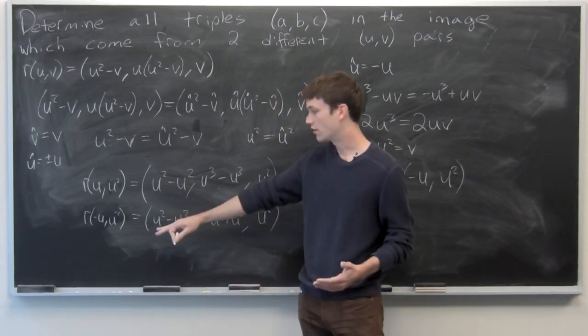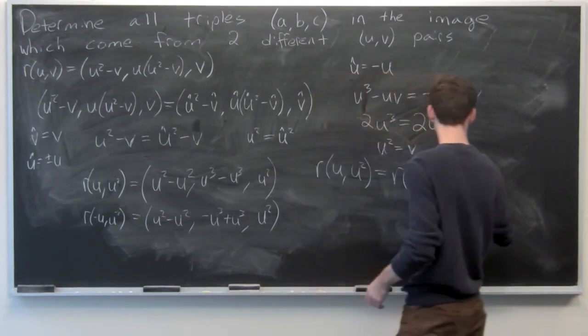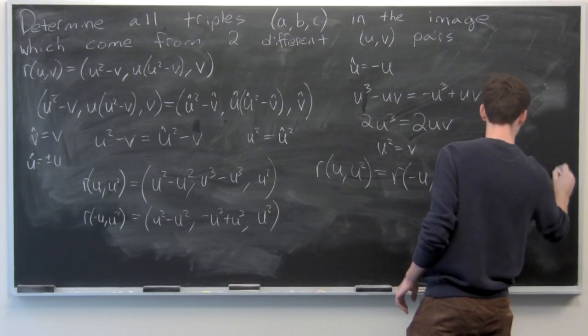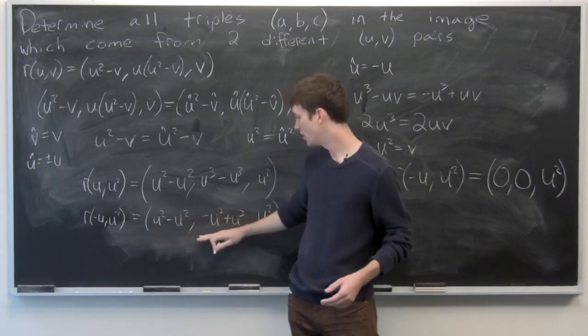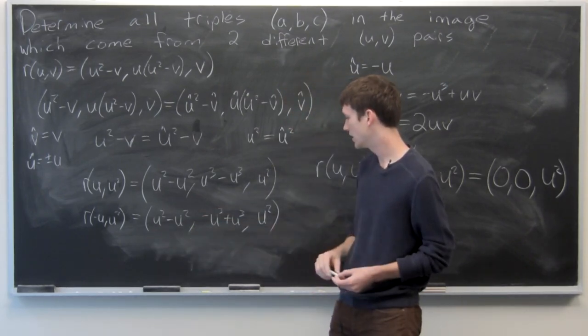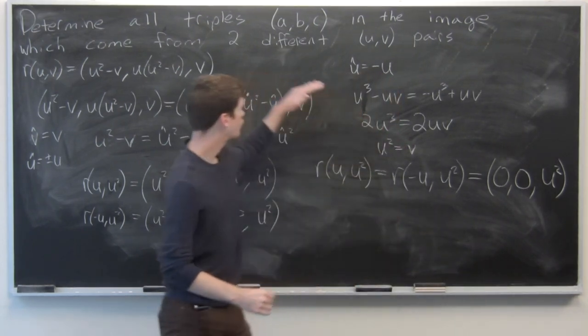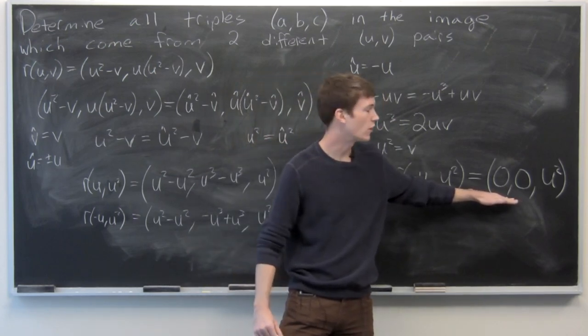So our triples are actually going to be of the form, since the first two components both sum to zero, the third component stays as u-squared. So we see that our triples a, b, c are in the form 0, 0, u-squared.